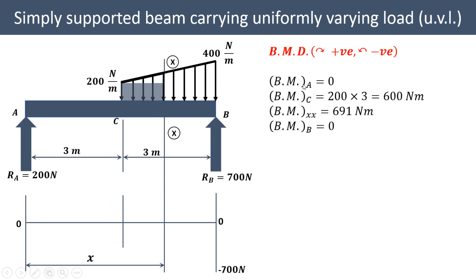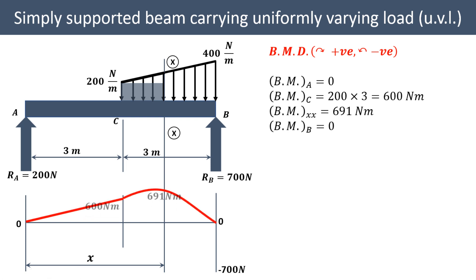We also calculate bending moments at other key points. At support points A and B, the bending moment is zero. At C, considering forces to the left, RA produces a clockwise moment: BM at C = 200 × 3 = 600 Newton-meter. So the bending moment values are: A = 0, C = 600 N·m, section XX = 691 N·m, and B = 0, from which we can draw the bending moment diagram.